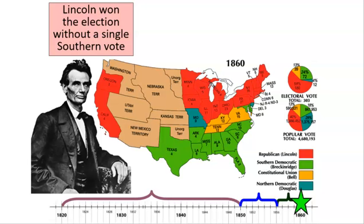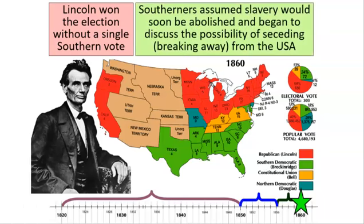Lincoln is going to win without a single Southern vote, and Southerners are really upset. They pretty much think that Lincoln is going to try and abolish slavery. The reason they think that is that in 1858, Lincoln gave a famous speech where he quoted the Bible, saying a house divided against itself cannot stand — that this country is either going to be all free or all slave. Southerners interpreted that as meaning he wanted it to be all free, and that slavery was about to go.